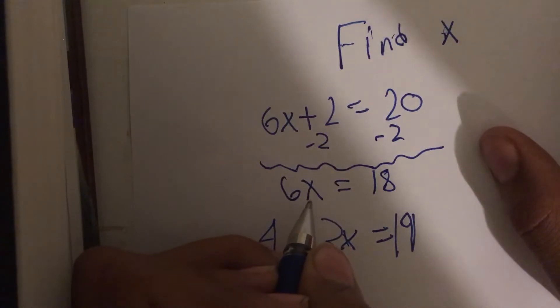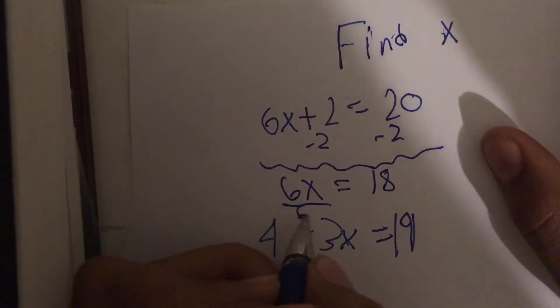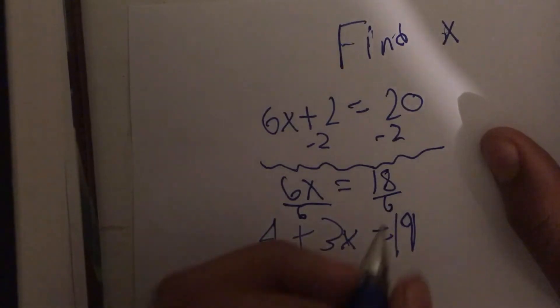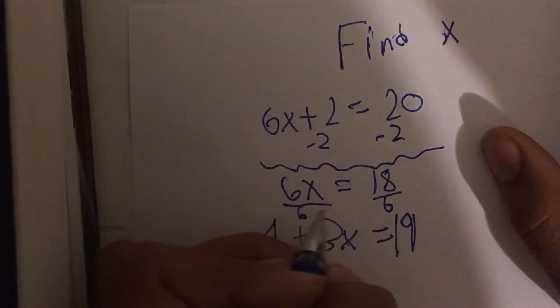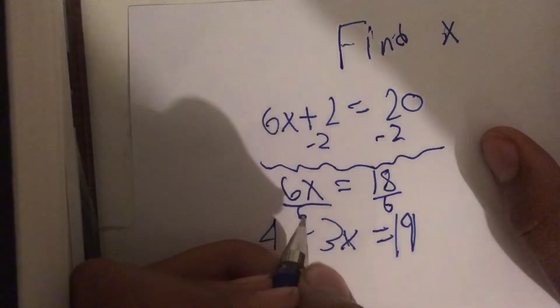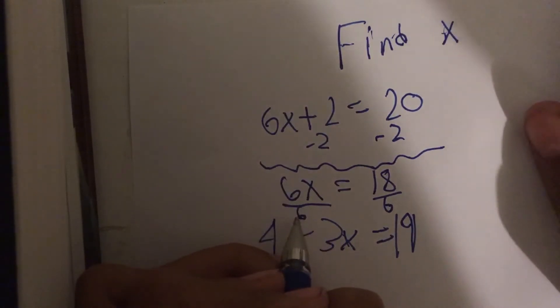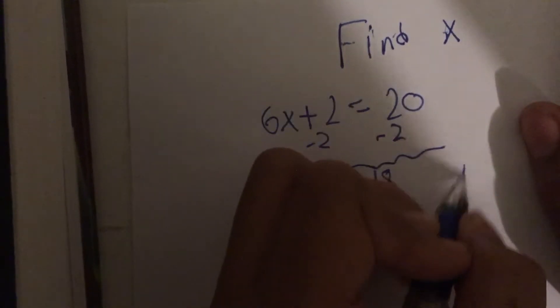The thing you're going to do next is divide both sides by 6. Since you see here, it says 6x, you're going to just try to find 1x instead of 6x, and this is how you find 1x. So, 6x divided by 6, that will equal x.